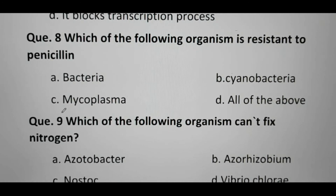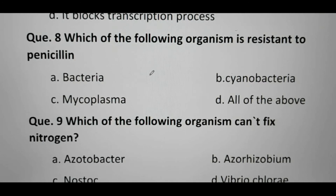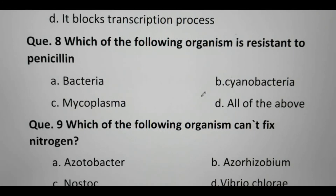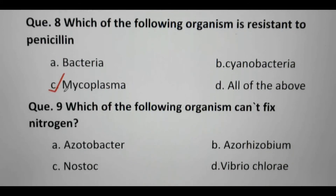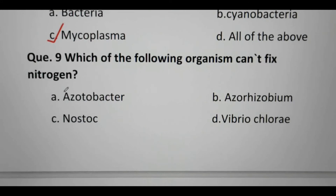Next question: which of the following organisms is resistant to penicillin? Options are Bacteria, Cyanobacteria, Mycoplasma, and another option. Penicillin attacks the cell wall. Mycoplasma is an organism that does not have a cell wall — its cell wall is absent. Therefore Mycoplasma is resistant to penicillin, and penicillin has no effect on Mycoplasma.